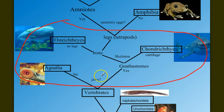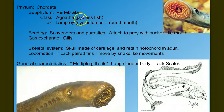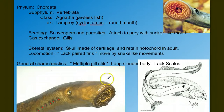The first thing we need to look at is the class Agnatha, the vertebrates that lack a jaw. The term Agnatha — 'a' meaning lacking, 'gnath' means jaw. These are the jawless fish, sometimes referred to as cyclostomes, or round mouth. If you look at a picture of a lamprey or a hagfish, you can see why this is a very appropriate name.